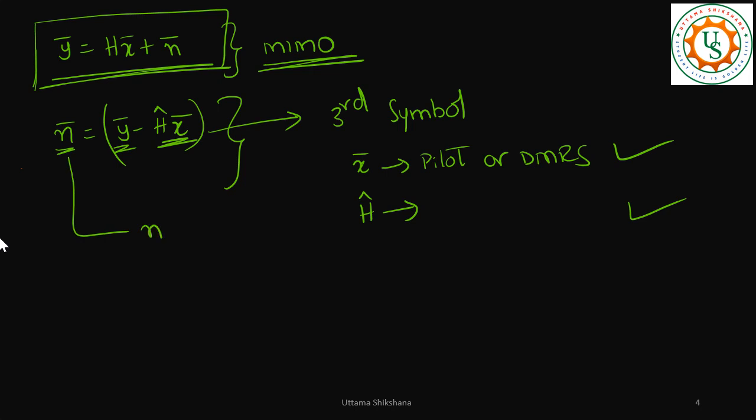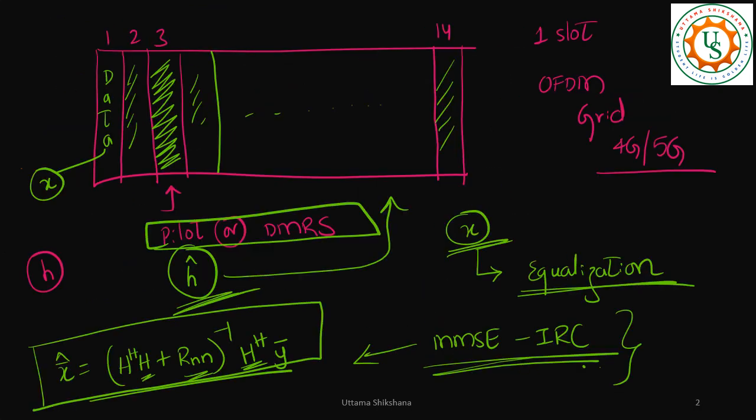Once we know n_bar, then you perform the expectation of n_bar n_bar hermitian to get R_nn. Once you get to this one and using the channel estimation h_hat, you can go back and perform your MMSE IRC to get back your data x_bar_hat. This should be done across symbol number 1, 2, 4, 5, it goes up to 14, basically wherever there is no DMRS we should be performing this to get back the data.